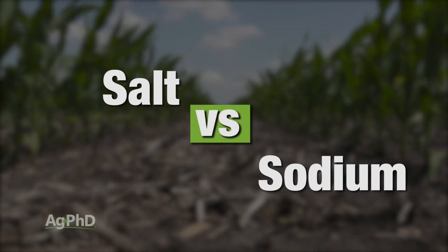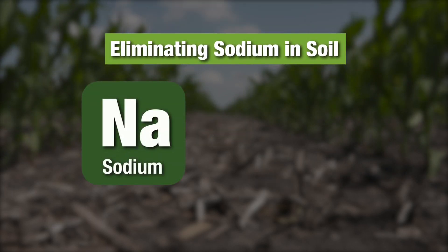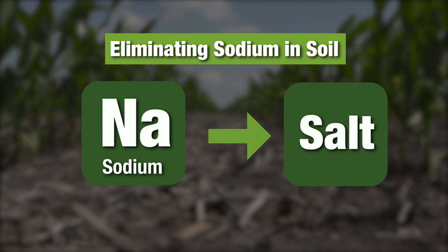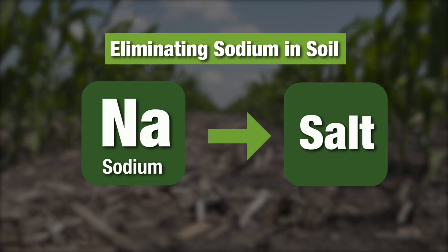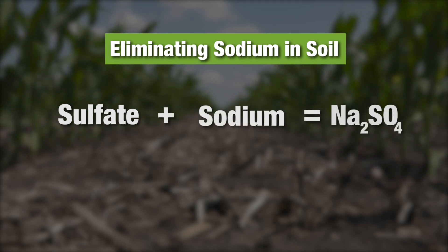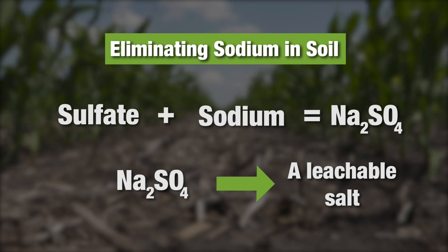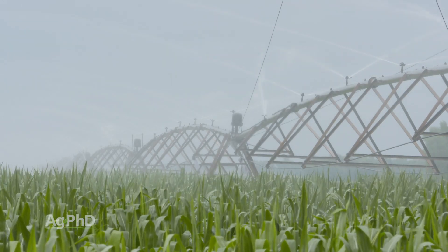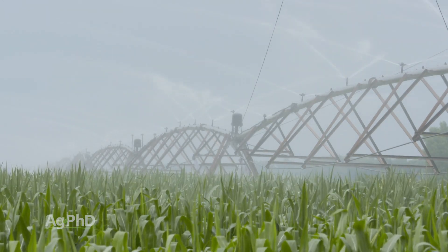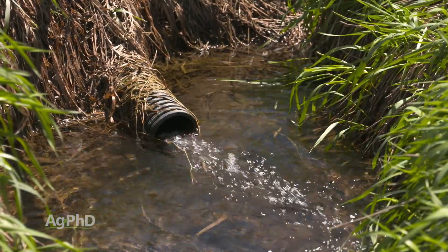Salt and sodium are two totally separate things. When we have sodium, the way you can get rid of it out of your field is you can turn it into a salt — and that's the reason why we want to know how much sulfur is out in that field. If you can combine sulfate together with sodium, you get sodium sulfate. That is a salt, that is leachable, and we can flush it out with normal moisture. Obviously we can speed the process up if we also have irrigation, but with normal moisture and/or irrigation plus good drainage — which again means tile.